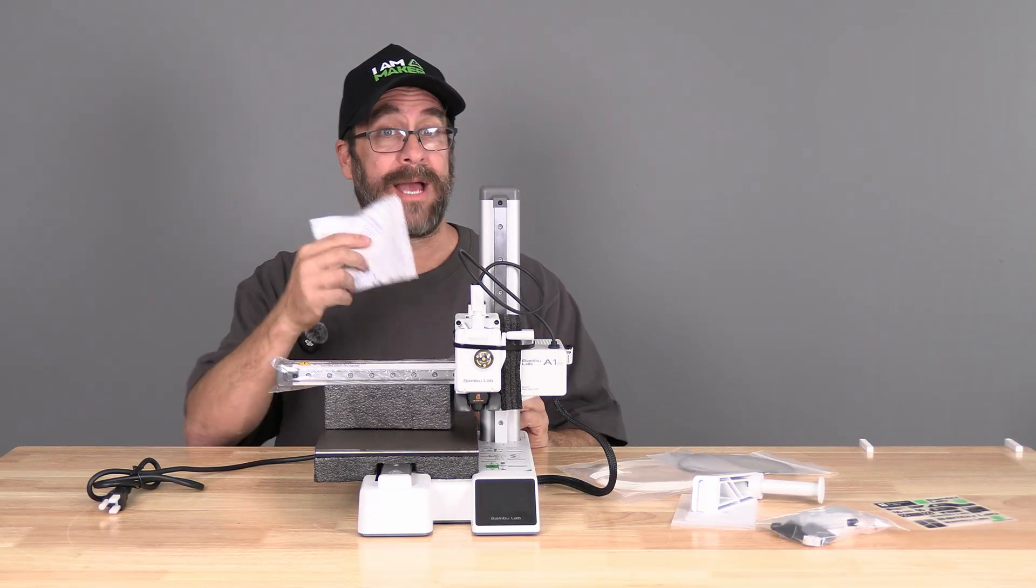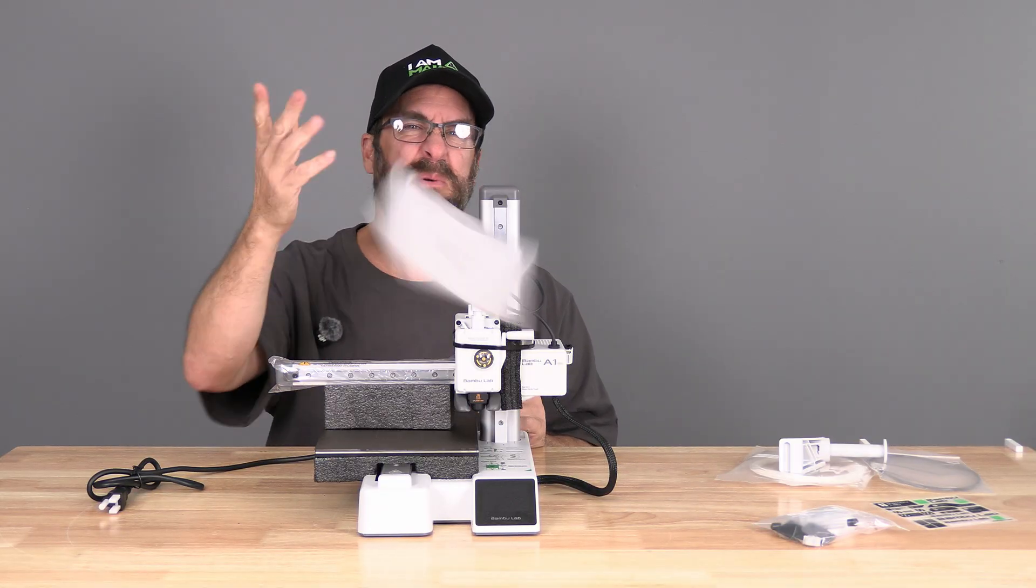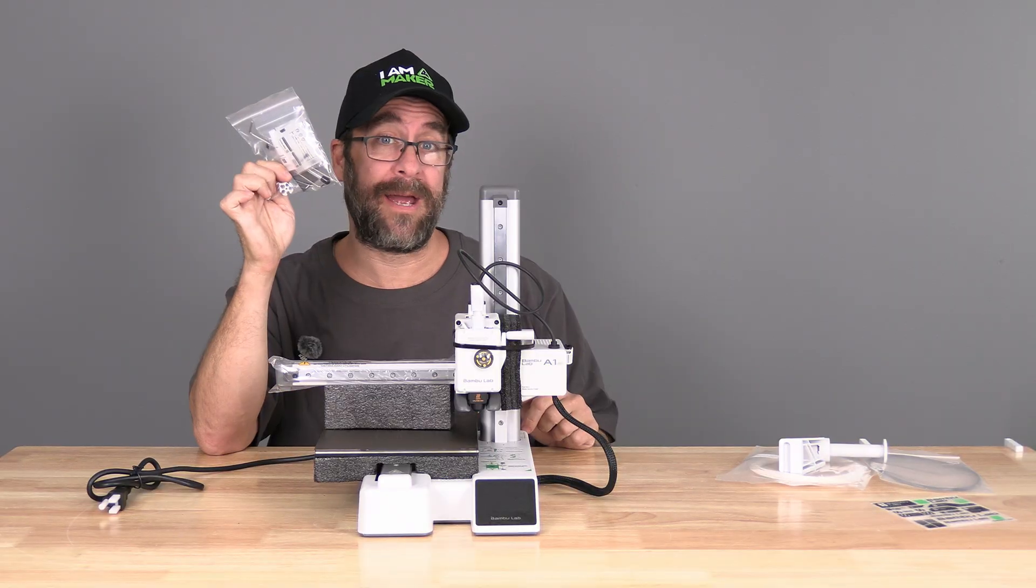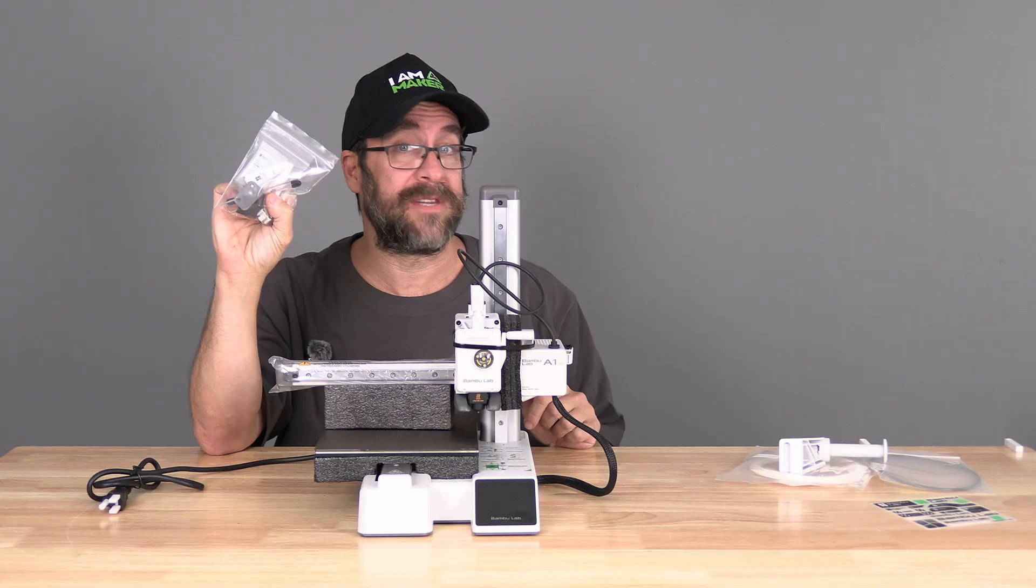This is a desiccant pack. You can dispose of that. This little pack has some paperwork you don't really need. This bag has important stuff. Open it up and retrieve the allen keys.